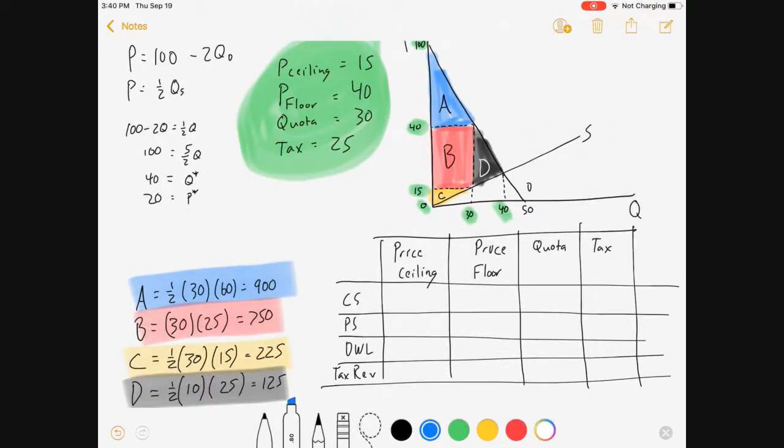If there's a price ceiling, my consumers, how much consumer surplus do they get? They get A, and they get B. Everything above that price ceiling of 15 becomes consumer surplus. Producer surplus in that situation is just C, deadweight loss is D, and there's no tax revenue.